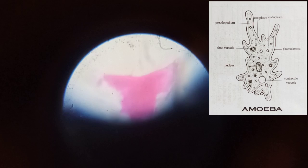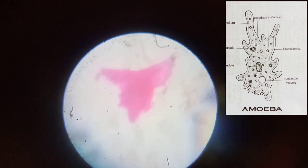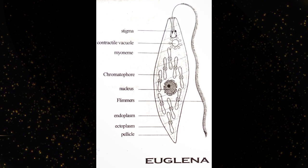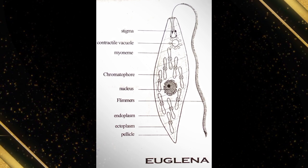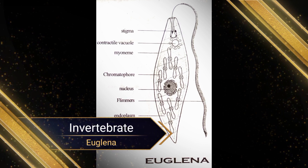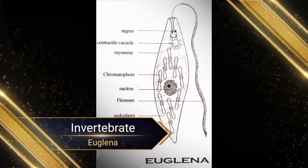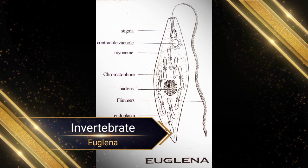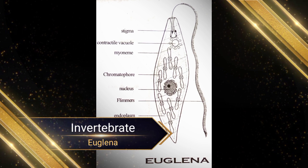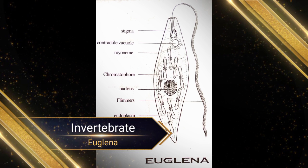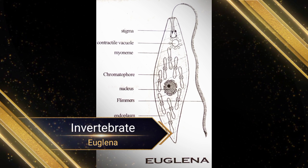Next is Euglena. Phylum Protozoa, Class Masticophora, Superclass Masticophora, Class Phaetomasticophora. Euglena is the connecting link between plants and animals. It is covered with a pellicle.